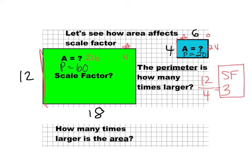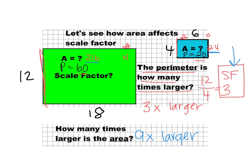So now let's see how the perimeter compares. When we're going from our smaller to our larger — from 20 to 60 — it's 3 times larger. And if you notice the connection between the areas, going from 24 to 216, it's actually 9 times larger. This connection has to do with the scale factor, and we're going to talk more about that in just a second.